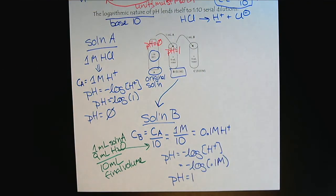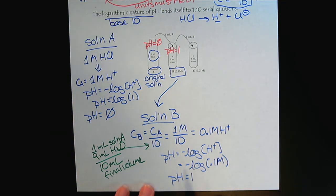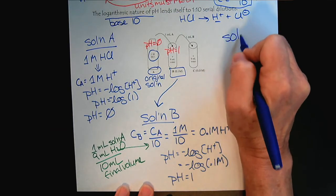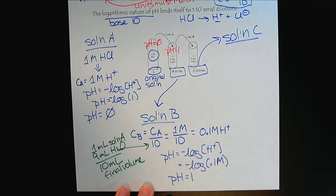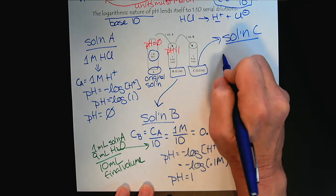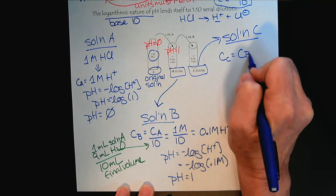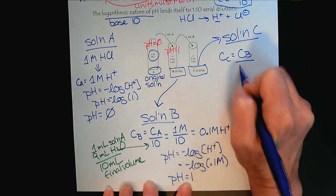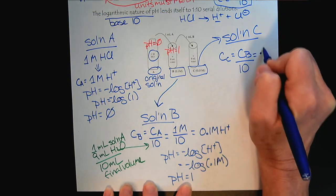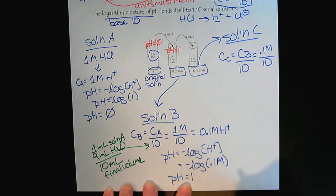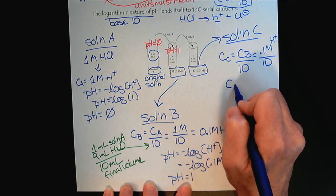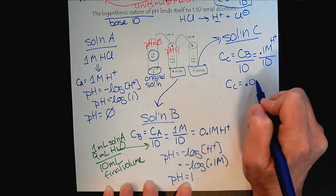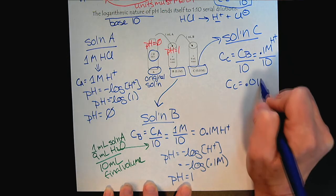So we're seeing the lovely synchronicity between 1 to 10 serial dilutions and the pH scale. Let's do one last solution just to make sure everybody understands. Let's look at solution C. So for solution C, the concentration of solution C will be the concentration of solution B divided by 10. So that will be 0.1 molar divided by 10 for H+.